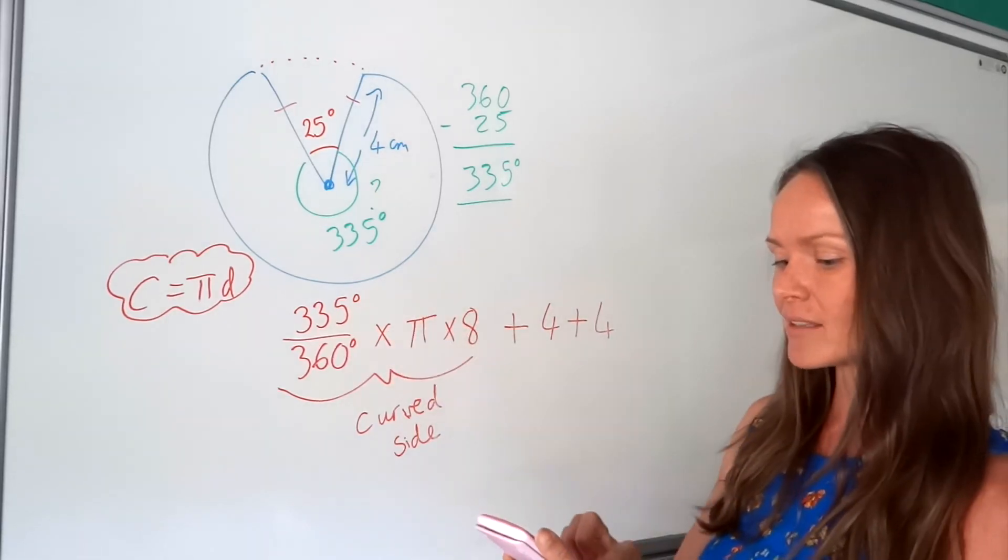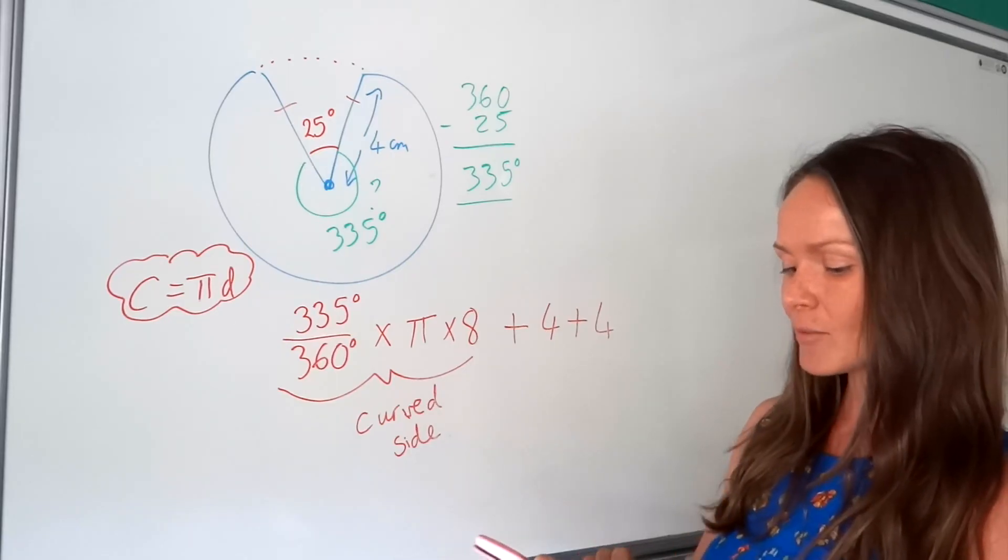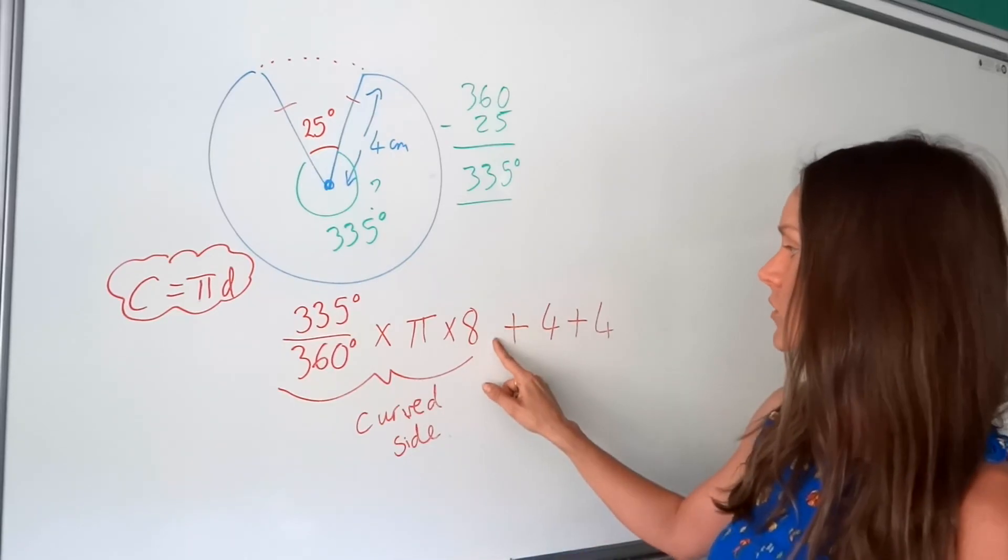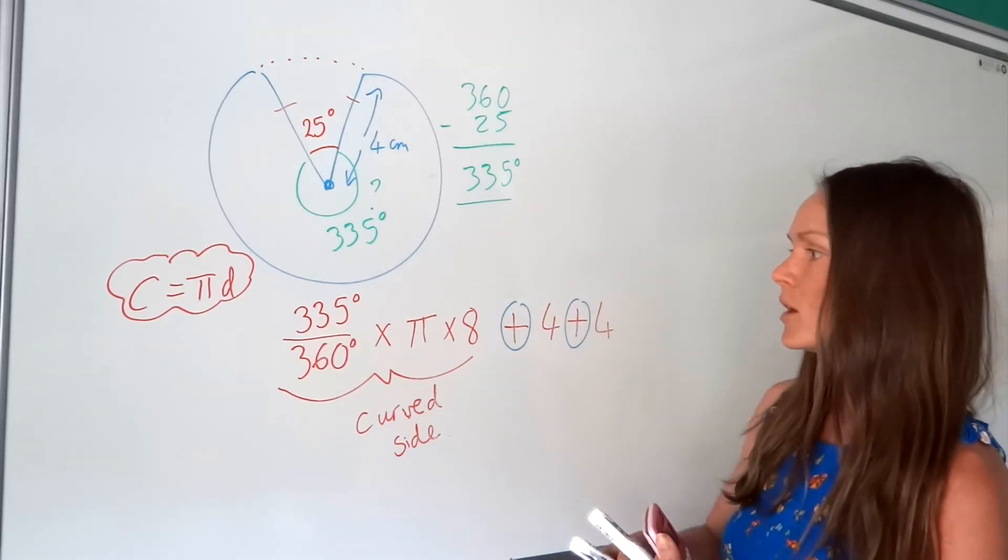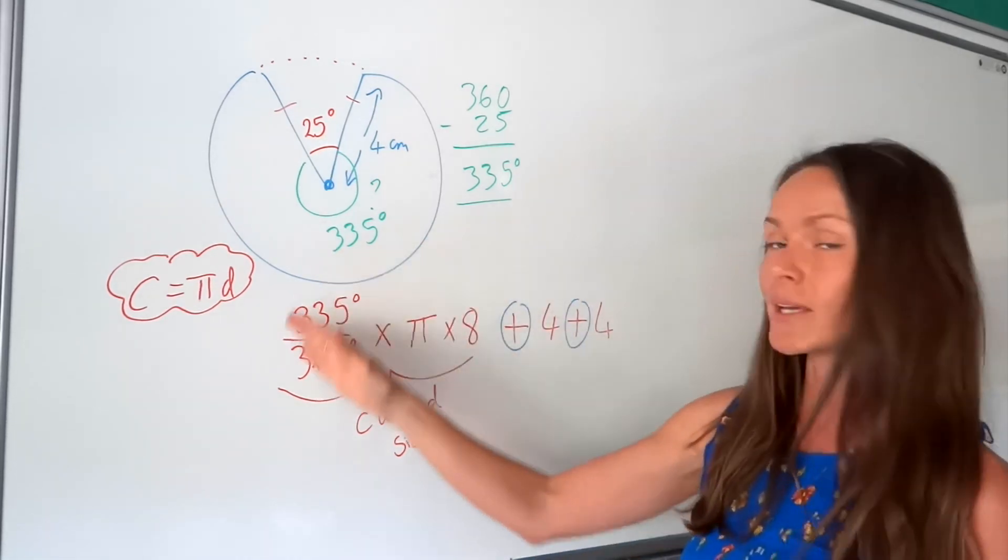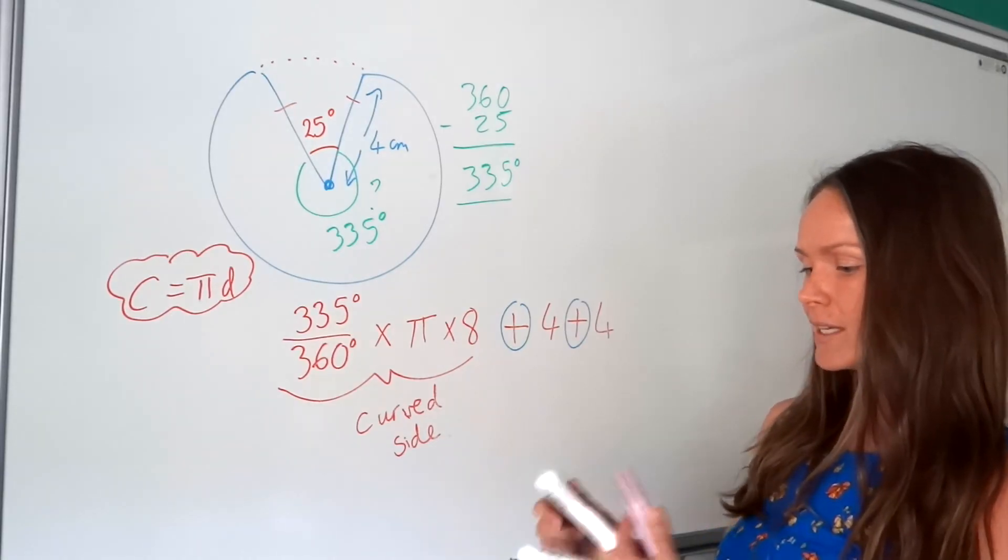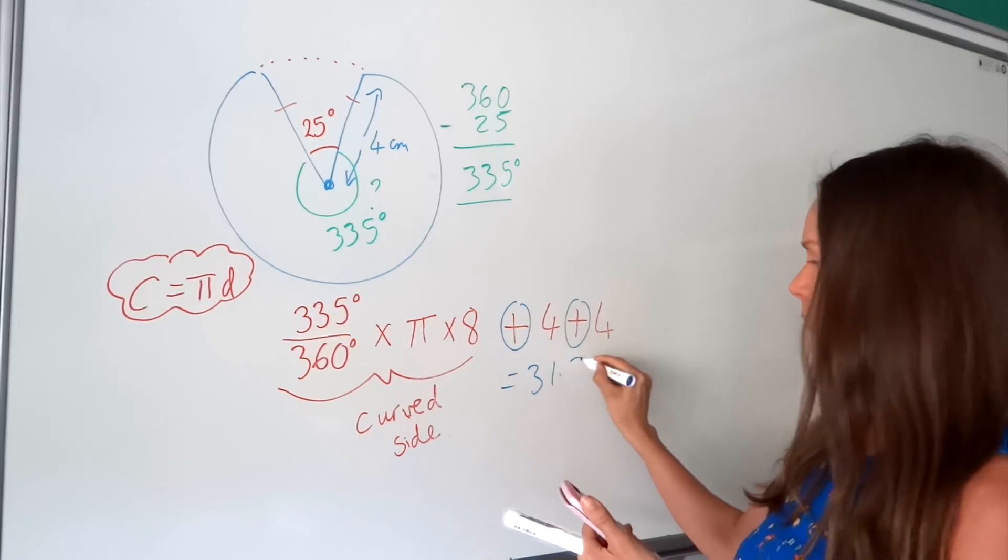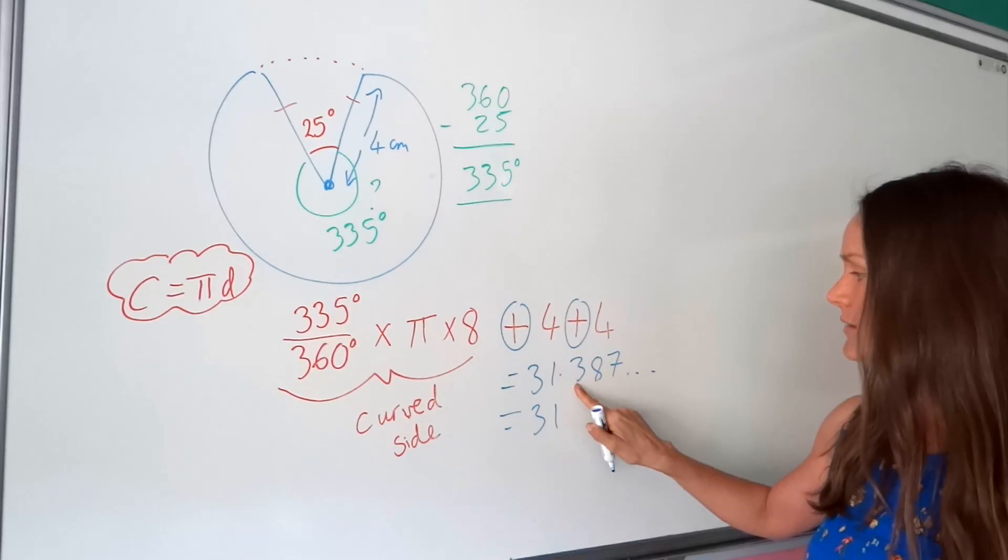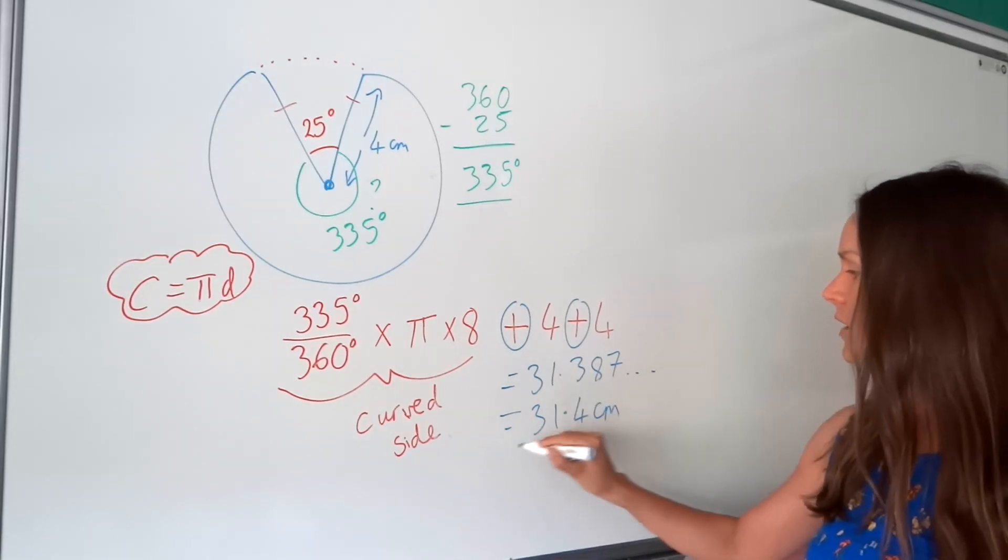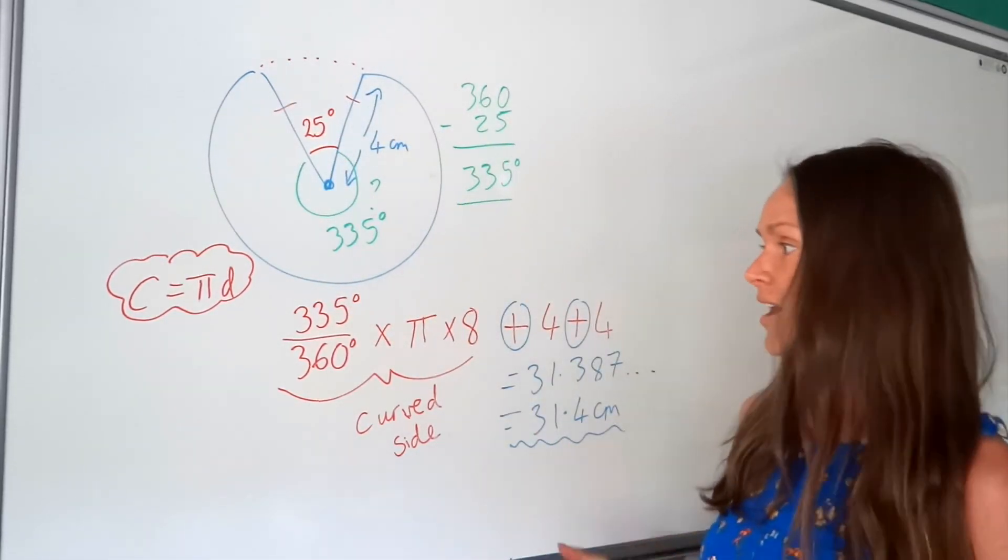So remember, you don't need to put degrees in the calculator. You're just writing the fraction, 335 over 360, times by pi, times by 8. And then I'm just going to go straight in to adding 4 and adding another 4. So I'm not rounding throughout the question. I'm keeping this in its exact form. So plus 4 plus 4 gives me 31.387. And again, round to 3 significant figures. So the 8 rounds that 3 up to 4. So the final answer, the total perimeter of this sector here, is 31.4 centimetres.